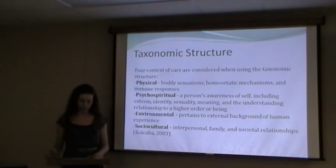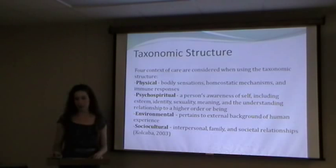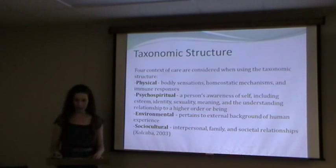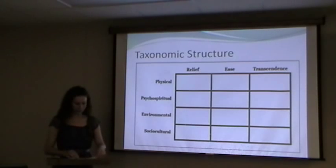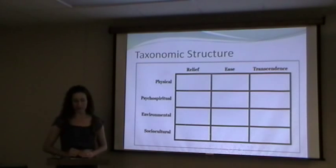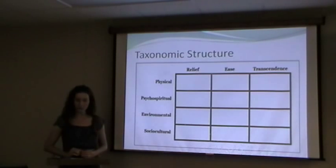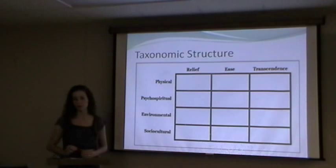These are used for illustrating the properties of comfort. Comfort is considered an essential goal and a set outcome for all healthcare. Comfort can be holistic and complex, and each aspect of care is represented by a cell in the framework — these become interrelated aspects. At the top are relief, ease, and transcendence. Relief is the state of having a specific comfort need met. Ease is the state of calm or contentment, and transcendence is the state in which one is able to rise above a problem or pain. This will be reviewed as a case study later in the presentation.